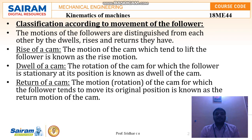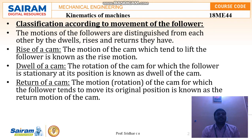To summarize: rise is where the follower initially starts moving upward, dwell is where the follower is in the rest or stationary condition, and return is where the follower comes back to the initial position. All follower motion falls within these three conditions — rise, dwell, and return. These are the classifications according to the movement of followers.